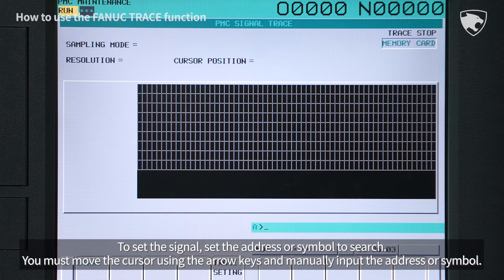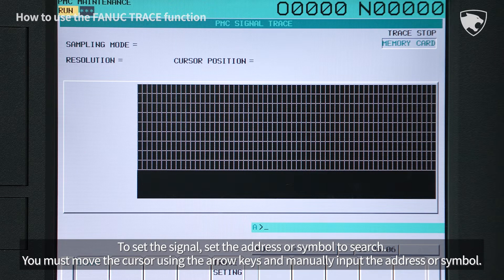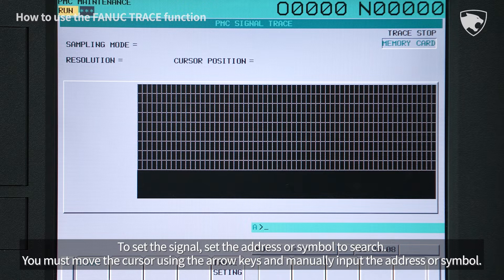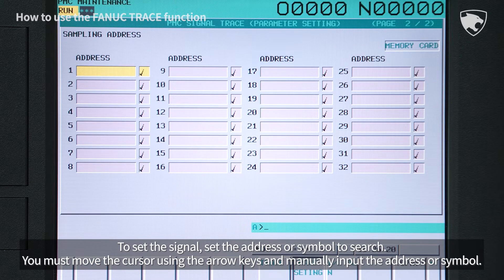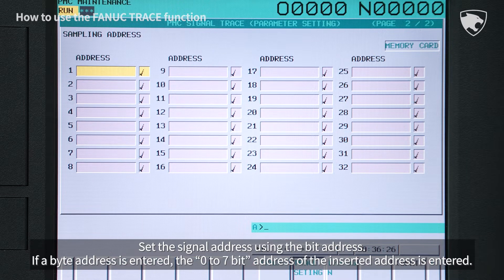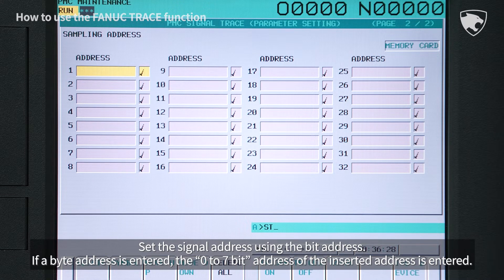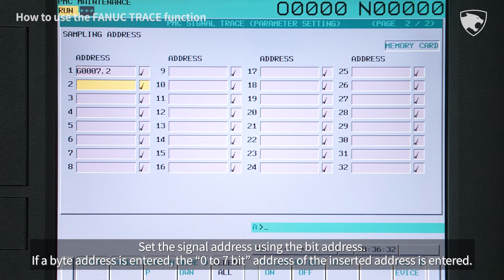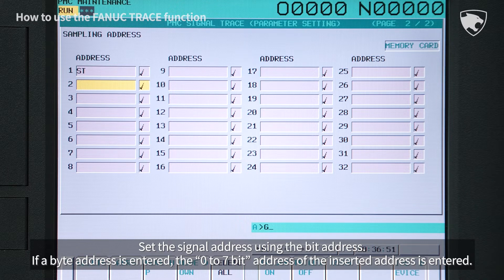To set the signal, set the address or symbol to search. You must move the cursor using the arrow keys and manually input the address or symbol. Set the signal address using the bit address. If a byte address is entered, the 0 to 7 bit address of the inserted address is entered.